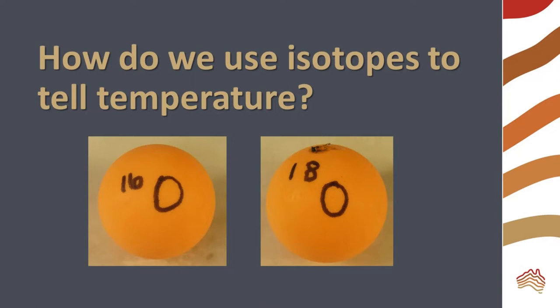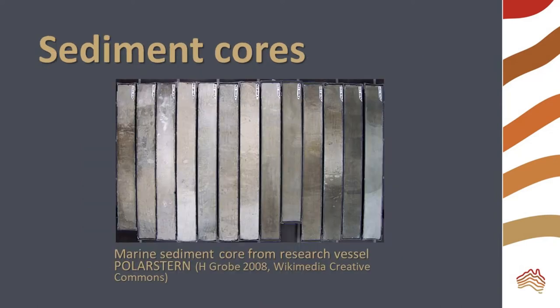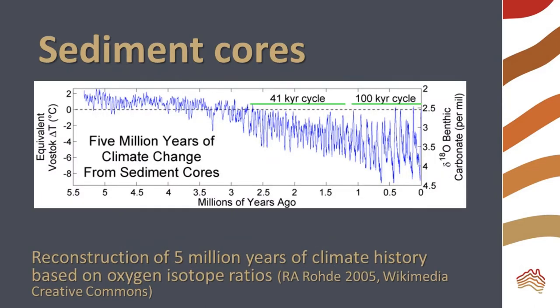How do we use isotopes to tell temperature? Oxygen isotopes in ocean water are incorporated into carbonates in the shells of marine organisms and in limestone formed by chemical precipitation. Scientists can analyze cores of sediment to investigate the ratios of oxygen isotopes and use these, along with ice core information, to determine past temperature.